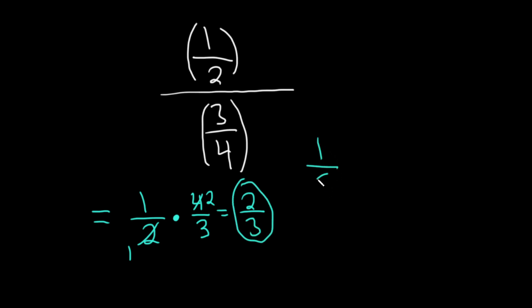If you don't like the way I simplified that, you don't have to do it that way. You can just multiply through. You get 4 over 6. Then you can pull out a 2. 2s cancel. You get 2 thirds.